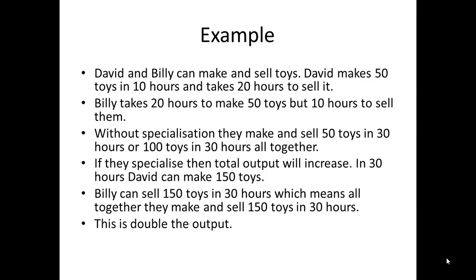Without specialisation, they each make and sell 50 toys in 30 hours, or 100 toys in 30 hours altogether. If they specialise, total output will increase. In 30 hours David can make 150 toys, and Billy can sell 150 toys in 30 hours. That means in the same time they will be able to produce 150 toys, so output has increased by 50%.